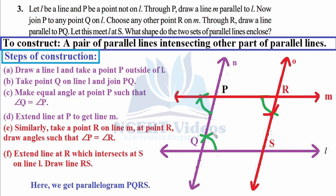Steps of construction, part A: draw a line l and take a point P outside it. The given information is marked in one color and the construction in another. We construct line l denoted with small l with arrow arcs at each end, then take point P within some finite distance from l. Through P we must construct line m parallel to l using the property of alternate interior angles of a transversal.